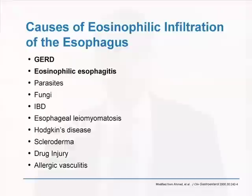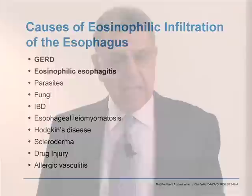Other causes of eosinophilia must be ruled out. There are multiple causes, but we can dispense with parasites, fungi, and IBD because they occur in a clinical context where you wouldn't be thinking of EOE. The differential diagnosis concentrates mostly on GERD and EOE. Occasionally, particularly in children, eosinophilic gastroenteritis will come up, but that presents with diarrhea and abdominal pain. For practical purposes, we concentrate on the relationship between GERD and EOE.